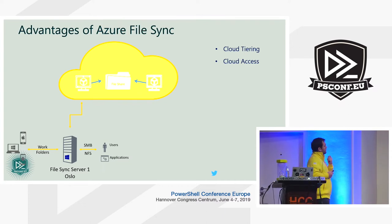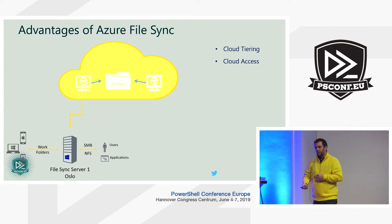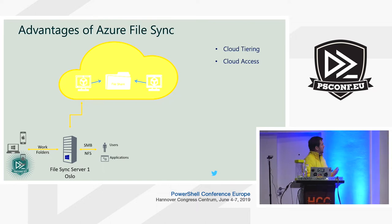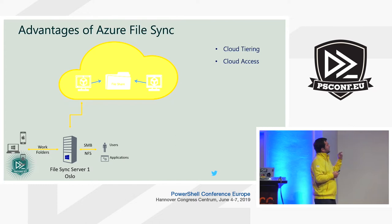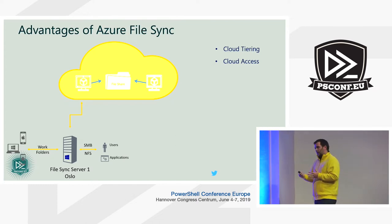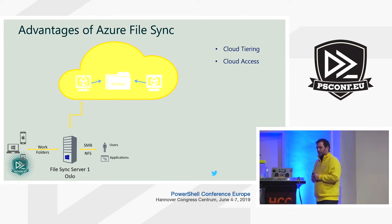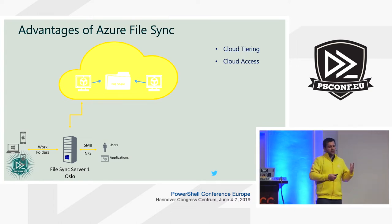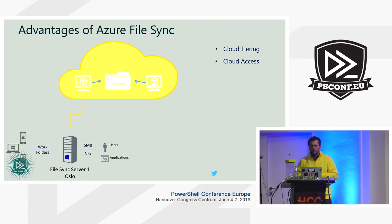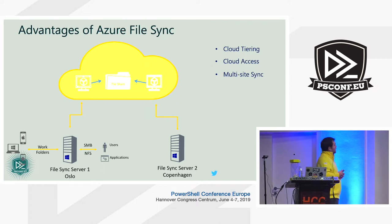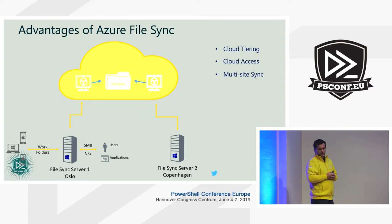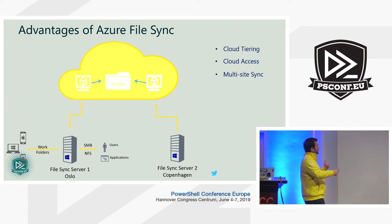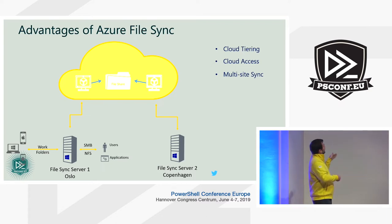Cloud access is another important aspect. In some scenarios it makes sense to directly access the cloud endpoint via SMB, and you can also access the same files via REST API for more modern applications. We also have multi-site sync, which can replace DFS Replication. If you have a file server in Oslo and one in Copenhagen, you can synchronize content between them via the cloud endpoint.